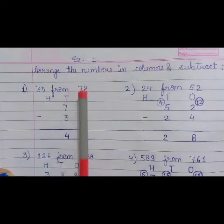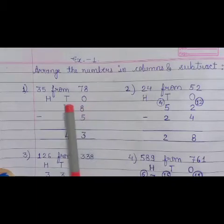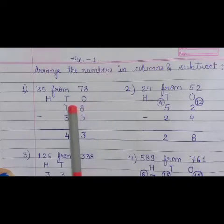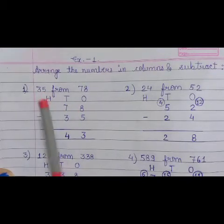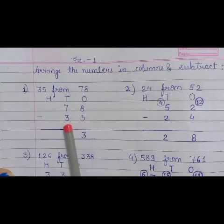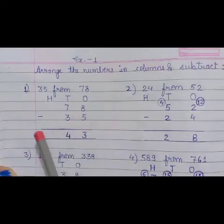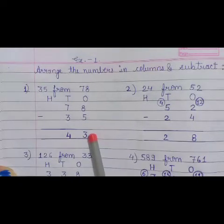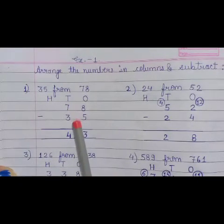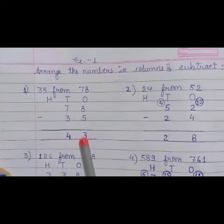Write 1s, 10s and 100s. Then write 78 first. So 8 at 1's place and 7 at 10's place. And then put minus sign and then write 35. 5 at 1's place and 3 at 10's place. Now subtract them. 8 minus 5 equals to 3. 7 minus 3 equals to 4. So 43 is our answer.